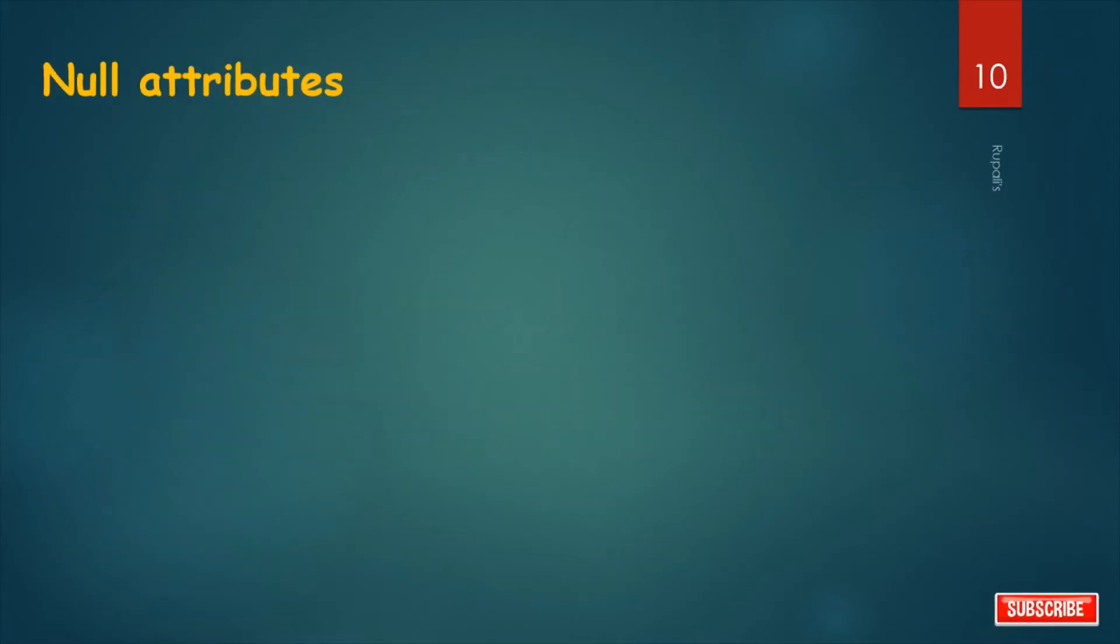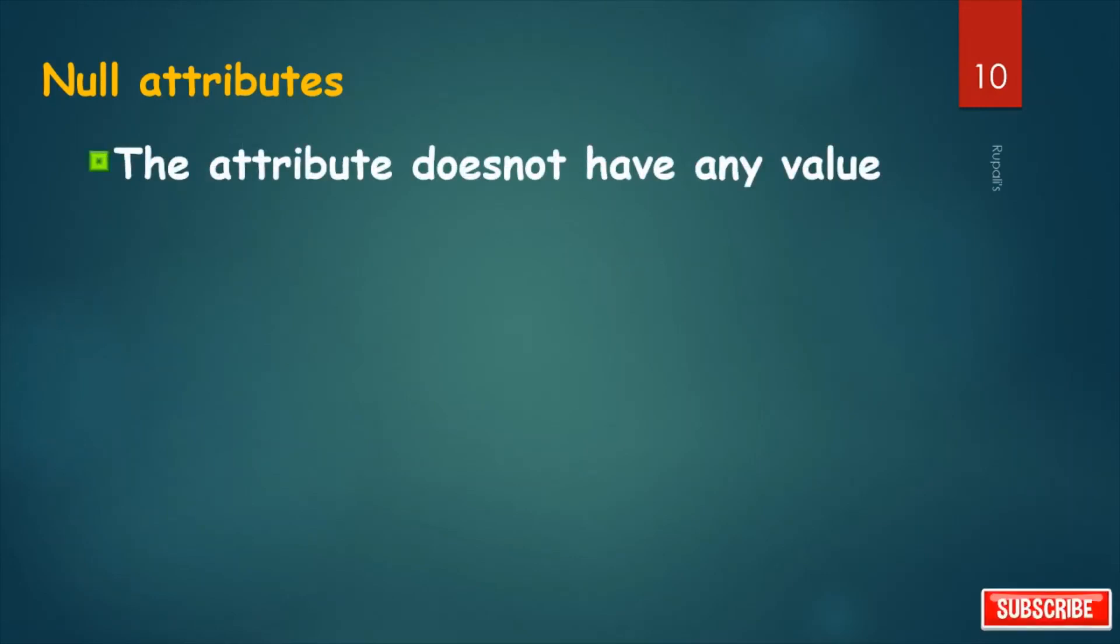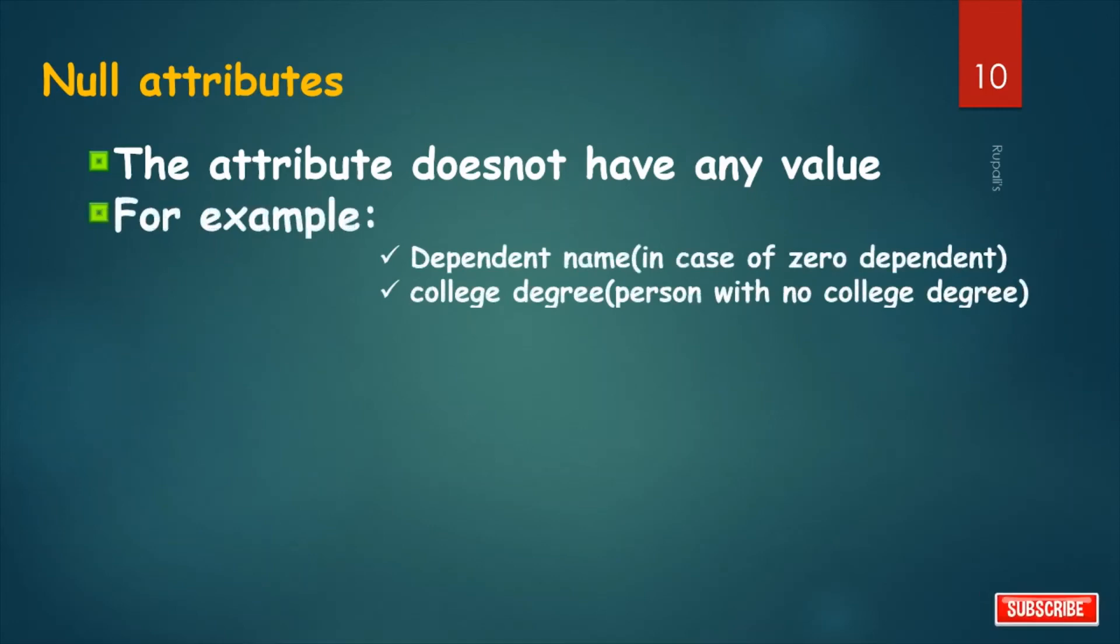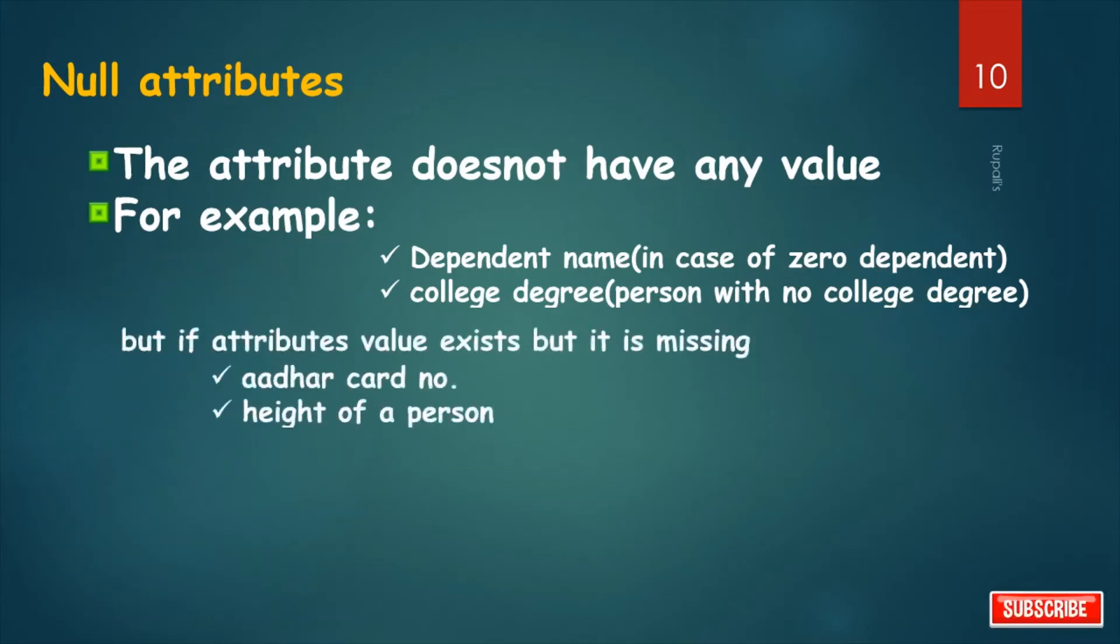Null attributes. In general, a null attribute value is the equivalent of nothing. The attribute does not have any value. For example, for a particular person has no dependent, then dependent name attribute is null for that particular person. For a particular person with no college degree, then college degree attribute is null for that particular person. But if attributes value exists but it is missing, say height of a person, Aadhaar card number of a person, then it is also null attributes.